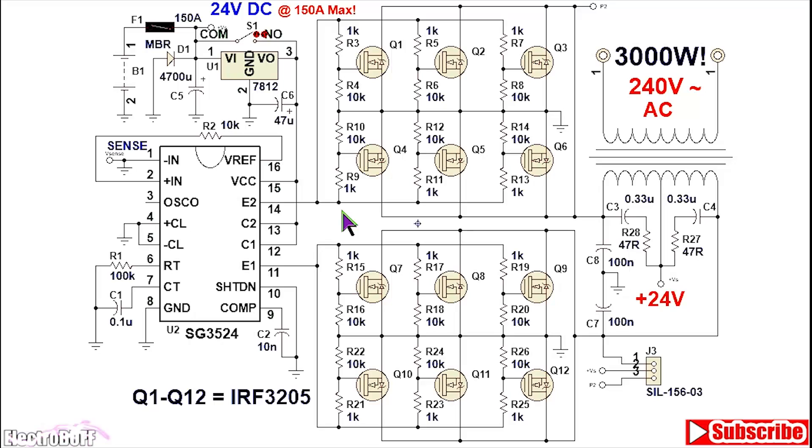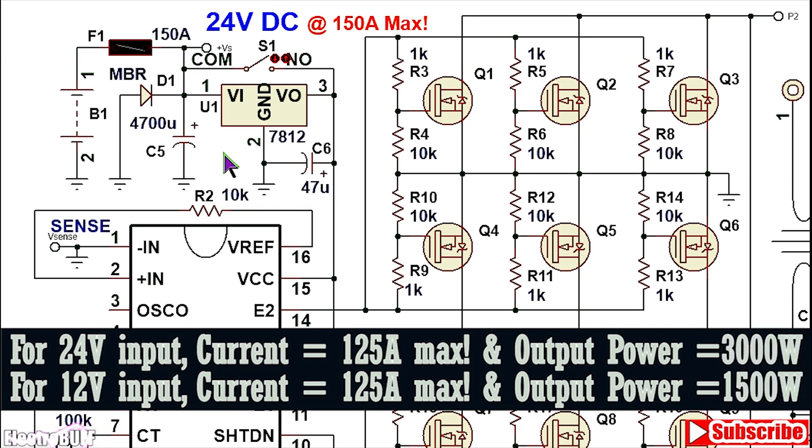The circuit is powered by the SG3524 PWM IC. The IC is very similar to the SG3525 because they also share most of the parameters and the pinouts. To power the project you need 24 volts DC and ensure that the voltage supply can deliver more than 125 amperes if you want 3000 watts output from an input voltage source of 24 volts.